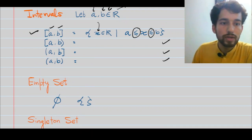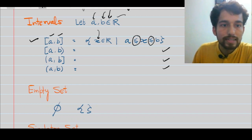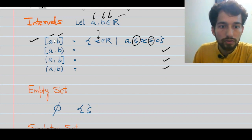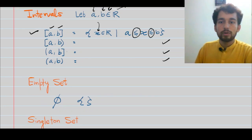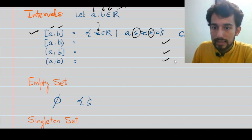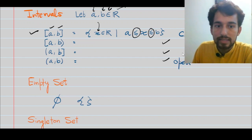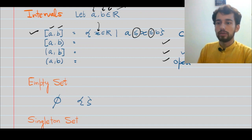One remark before moving ahead: broadly there are two types of intervals — a closed interval and an open interval — and these others are semi-closed and semi-open.